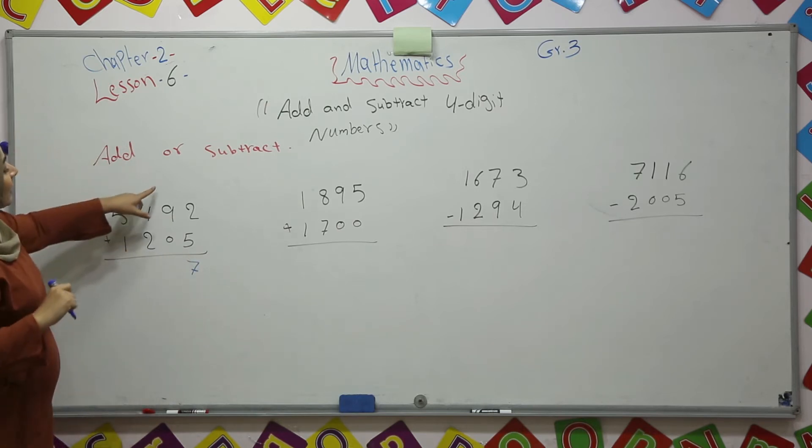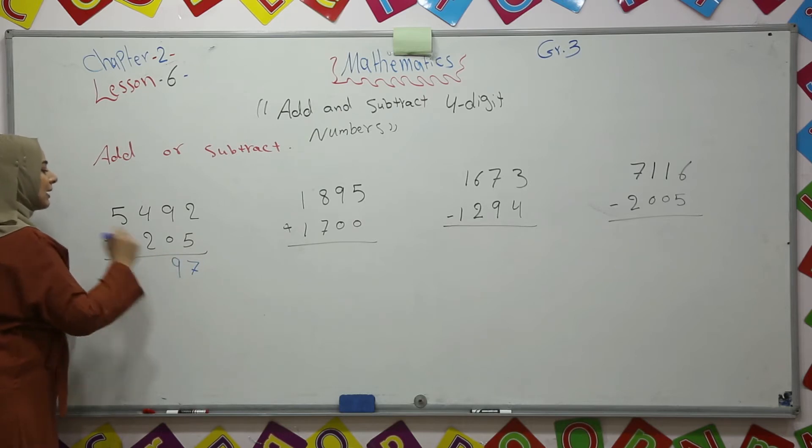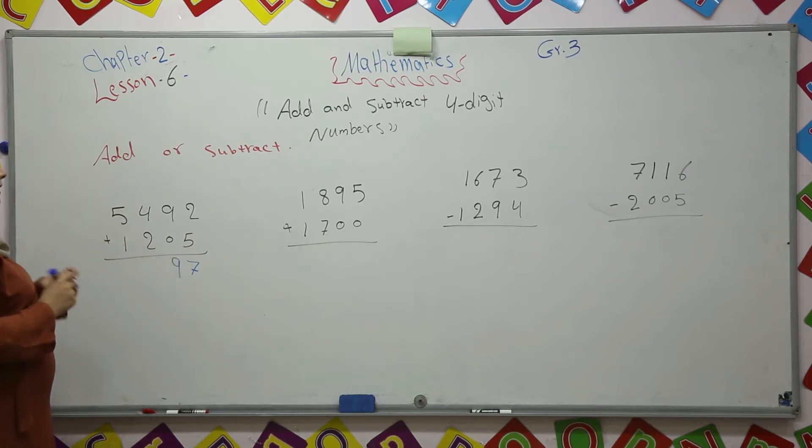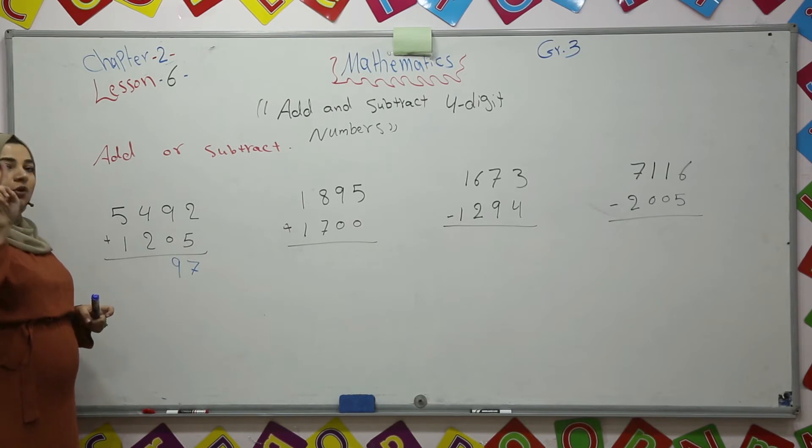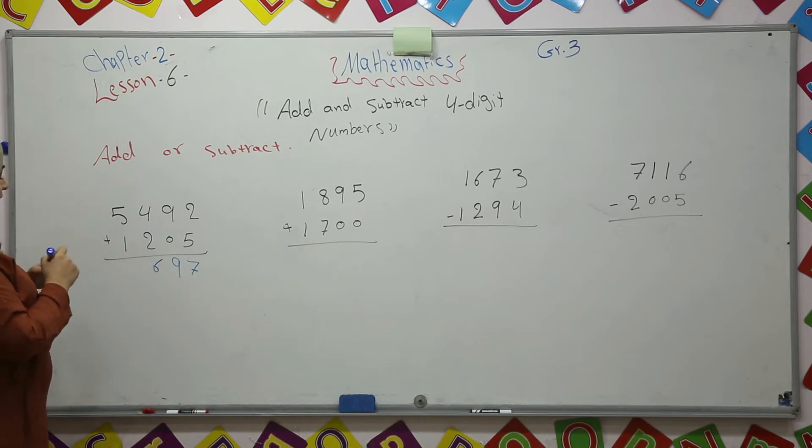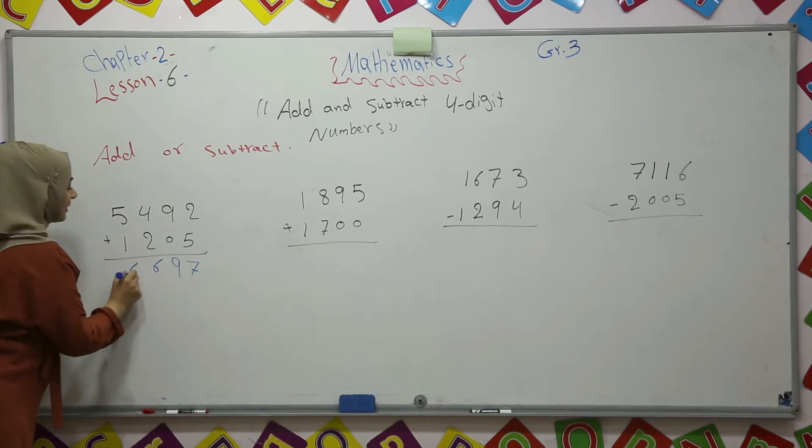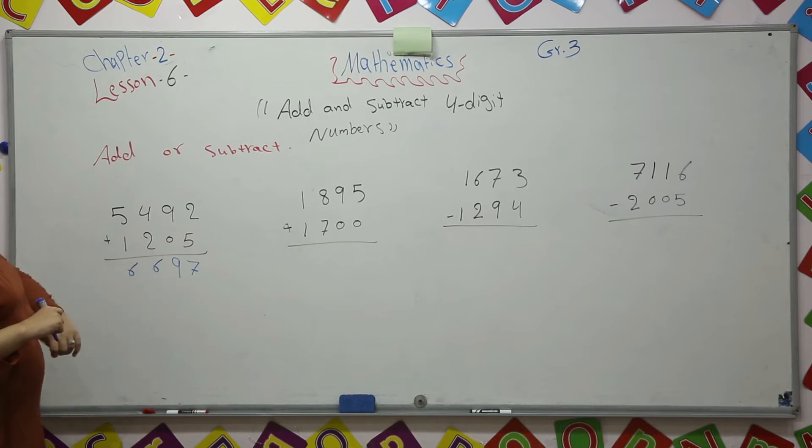9 plus 0 will stay as 9. 4 plus 2, 4 in your mind, 2 in your hand, 4, 5, 6. So it is 6. So the answer is 6,697.